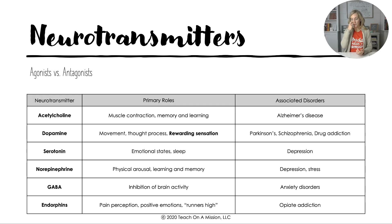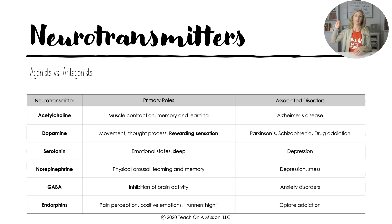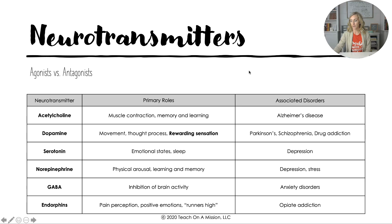Norepinephrine is involved in physical arousal, learning, memory, clinical depression, and stress. GABA actually inhibits brain activity and is involved in anxiety disorders; it also interacts with alcohol. Endorphins involve pain perception — they raise your pain threshold so you don't feel the full amount of pain — and are associated with positive emotions and a runner's high. Don't confuse endorphins with dopamine: dopamine is the rewarding sensation; endorphins are specifically about pain perception. Endorphins are very involved in opiate addiction.